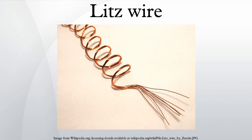Principle of operation: Litz wire reduces the degree of the skin effect and the proximity effect. The resistance of a conductor at DC depends on its cross-sectional area — a conductor with a larger area has a lower resistance. The resistance also depends on frequency because the effect of cross-sectional area changes with frequency. For alternating currents, the skin effect causes the resistance to increase with increasing frequency. For low frequencies, the effect is negligible.